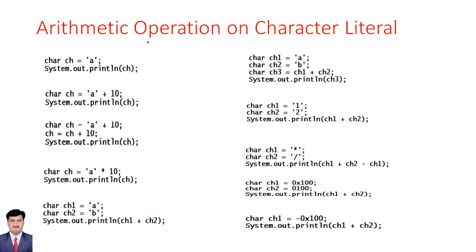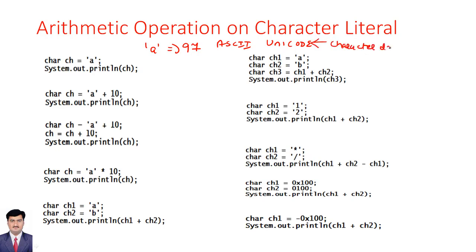Since characters are represented with the help of Unicode, each and every character like lowercase 'a' has a Unicode value of 97. Whatever representation was there in ASCII, the same structure has been retained in Unicode also. Our Java programming language uses Unicode characters to represent character data types. If we visit www.unicode.org, we can see all the supported Unicode characters.